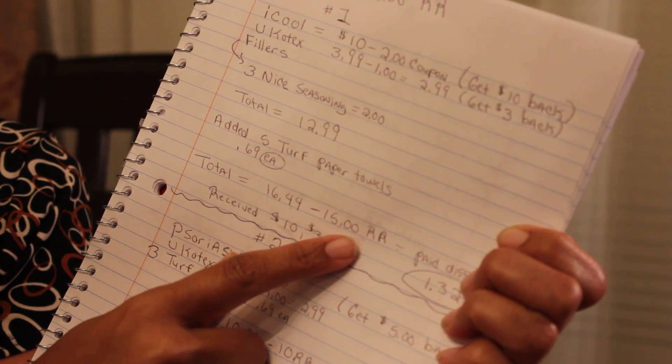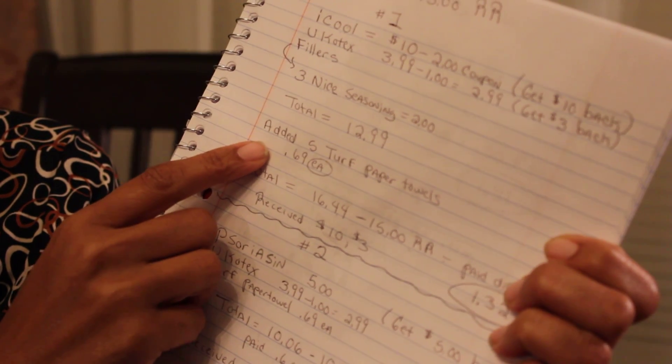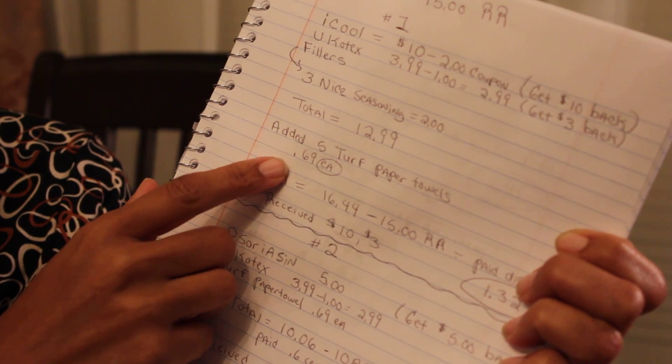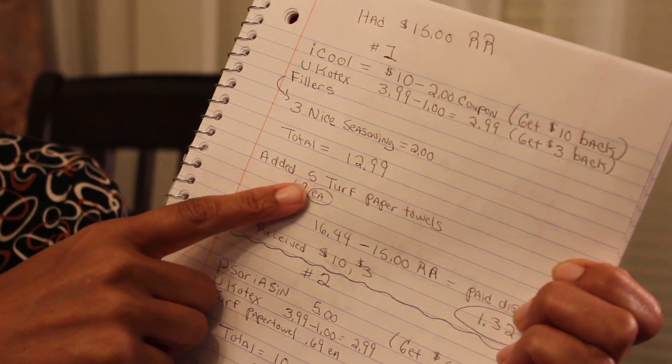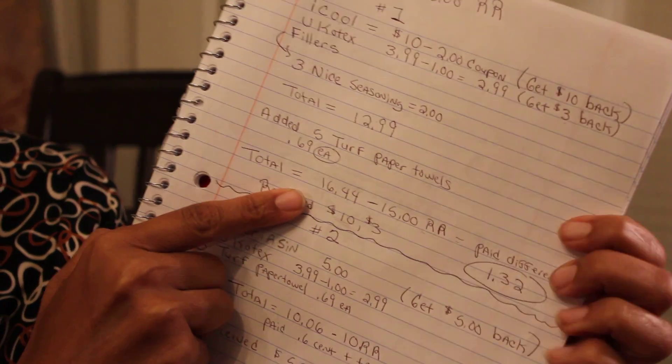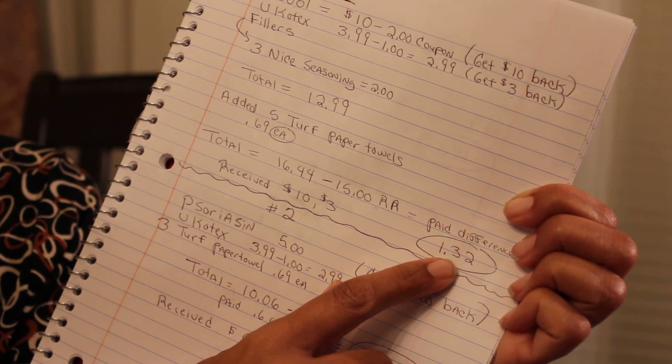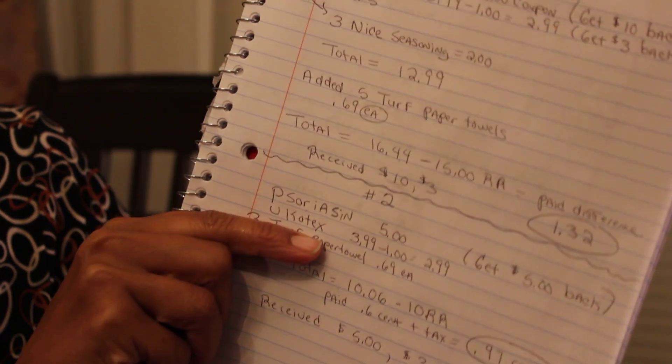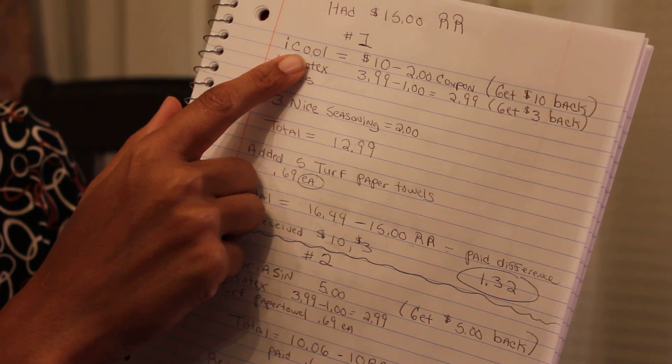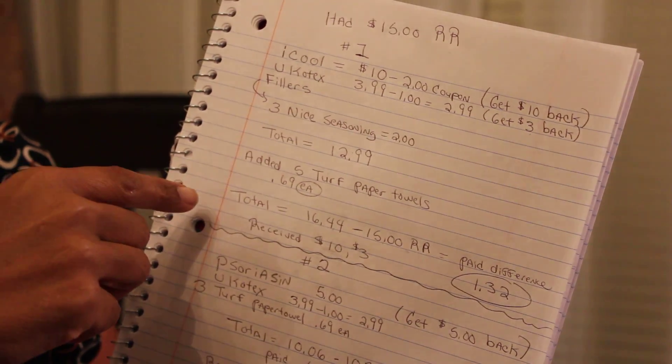I gave them $15 in register rewards that I had from last week. For those who are new, I'm still kind of new myself, sometimes when you buy an item at Walgreens they give you money back. I used my last week's savings and applied it to pay for these items. So out of pocket I paid $1.32.